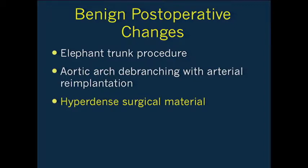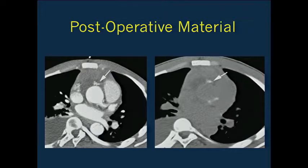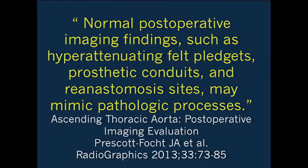The third category includes benign post-operative changes and some unusual appearances with elephant trunk procedures. Some of the unusual surgeries done now can simulate dissections when you look at axial images. Also, be aware of the pitfall of hyperdense surgical material—if uncertain, the non-contrast scan would show it's just typical pledgets from surgery. If you only have a contrast-enhanced scan, get delayed scans at three to four minutes. The last thing you want is someone going back to the OR for a complication that doesn't exist.